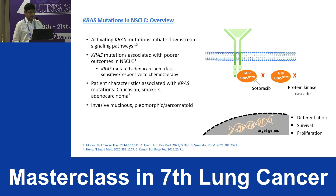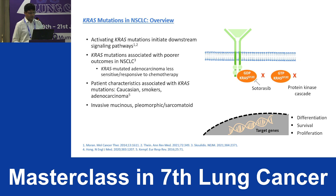In adenocarcinoma, G12C is around 13 percent in absolute numbers, making it an important subset of the KRAS universe. KRAS mutations initiate downstream signaling pathways and activate via the GTP pathway. They are associated with poor prognosis and less response to chemotherapy compared to KRAS wild type.